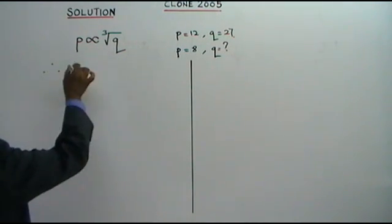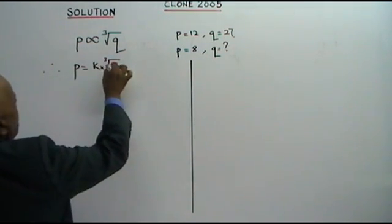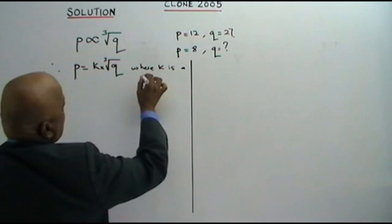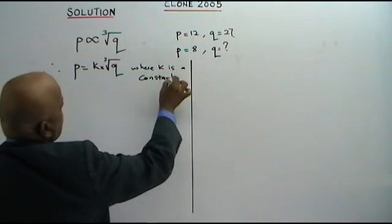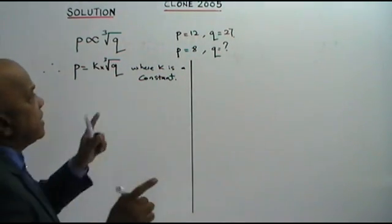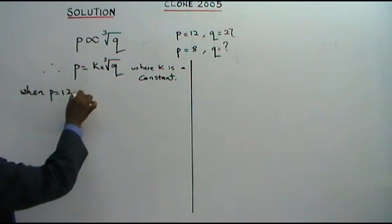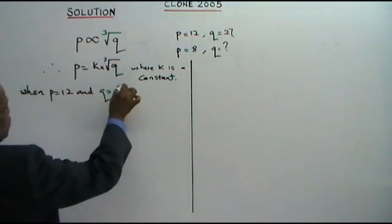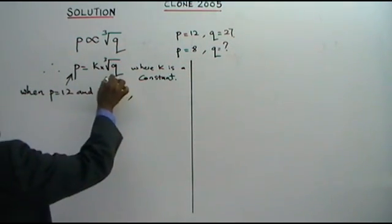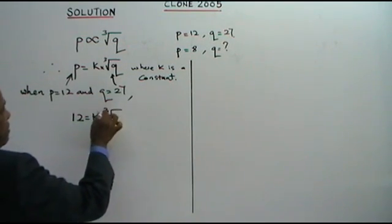Therefore, P is equal to K times the cube root of Q, where K is a constant. When P equals 12 and Q equals 27, we put these values in: 12 equals K times the cube root of 27.